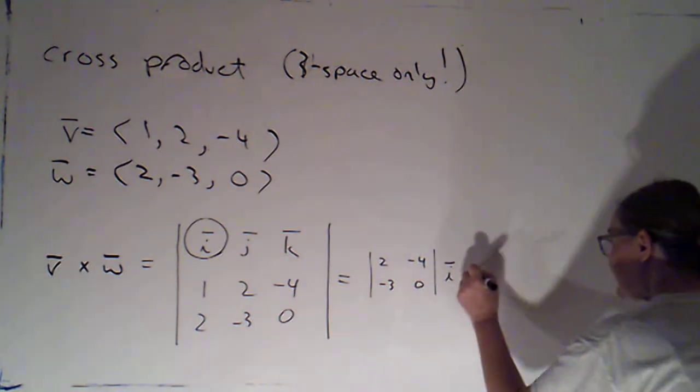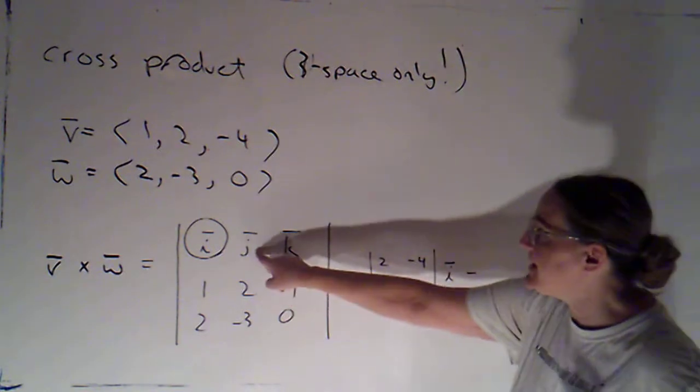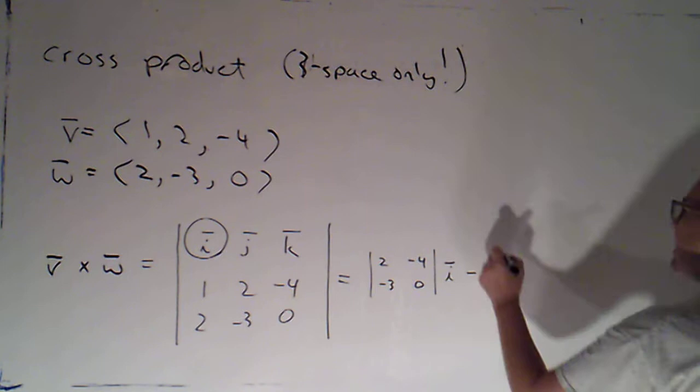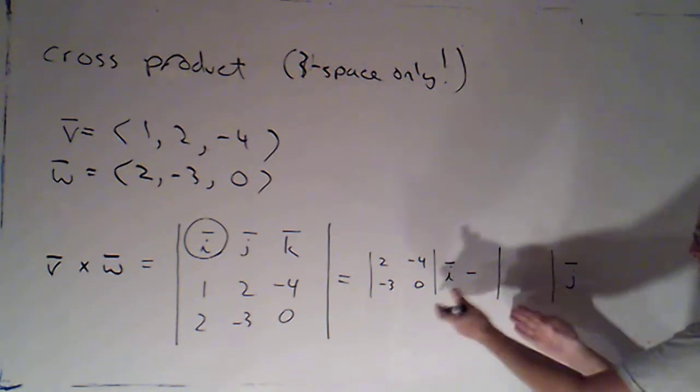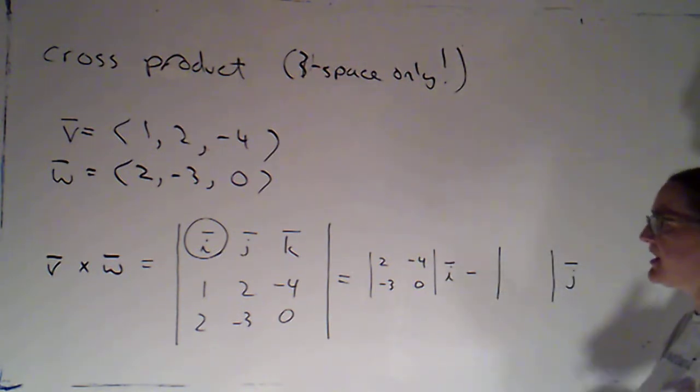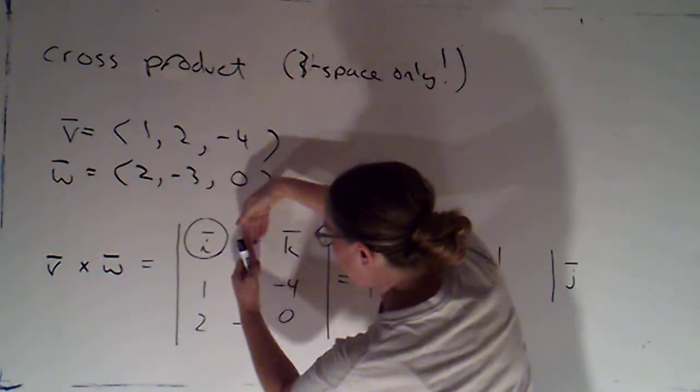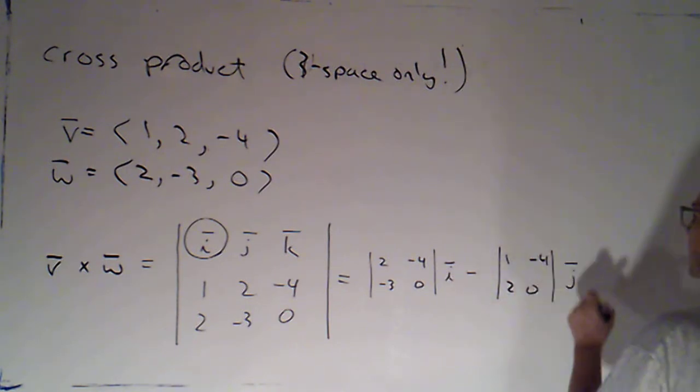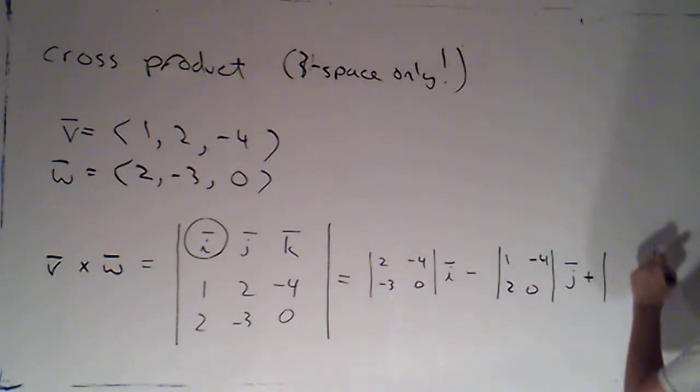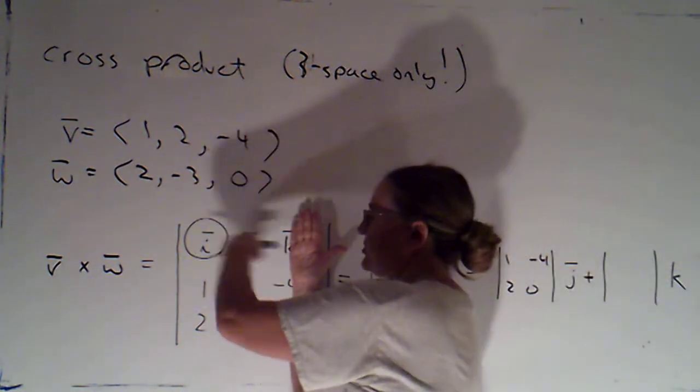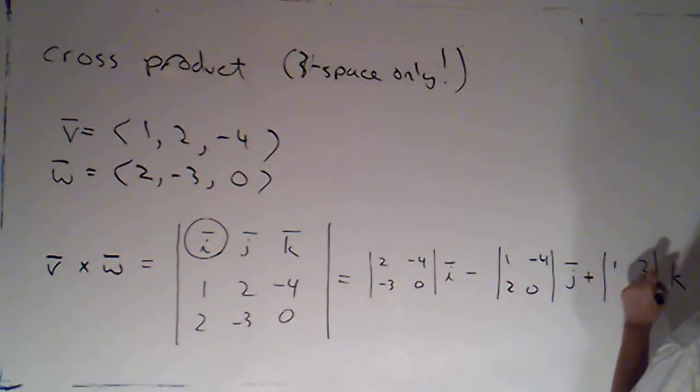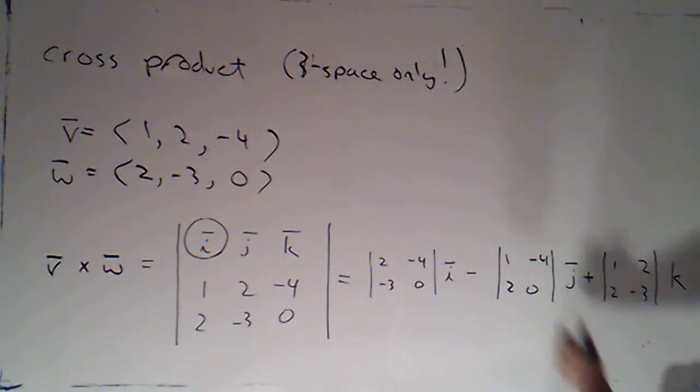And then minus, I do the same thing with the next entry. I'm going to get j times an appropriate 2 by 2 determinant. I'm going to write that 2 by 2 determinant first, because we usually write scalars in front of vectors. I calculate that by eliminating the row and the column that contain j. So I'm left with 1, negative 4, 2, 0. Plus, I'm going to get some k. And the scalar in front of k will just be the 2 by 2 determinant I get by eliminating the row and column containing k. So I'll have 1, 2, 2, negative 3.